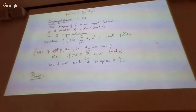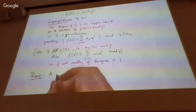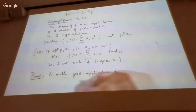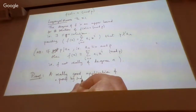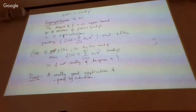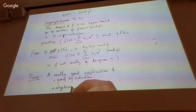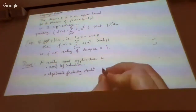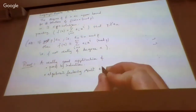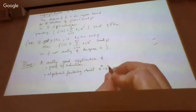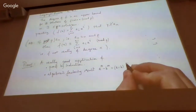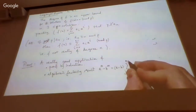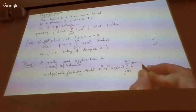We can prove this, and it's a really nice application of proof by induction. It uses a couple of things: proof by induction and some algebraic factoring results. In particular, this factorization: any difference of powers a^m minus b^m — you can always take the factor (a minus b) out of it. The other factor is the sum from j=0 to m−1 of a^(m−1−j) · b^j.